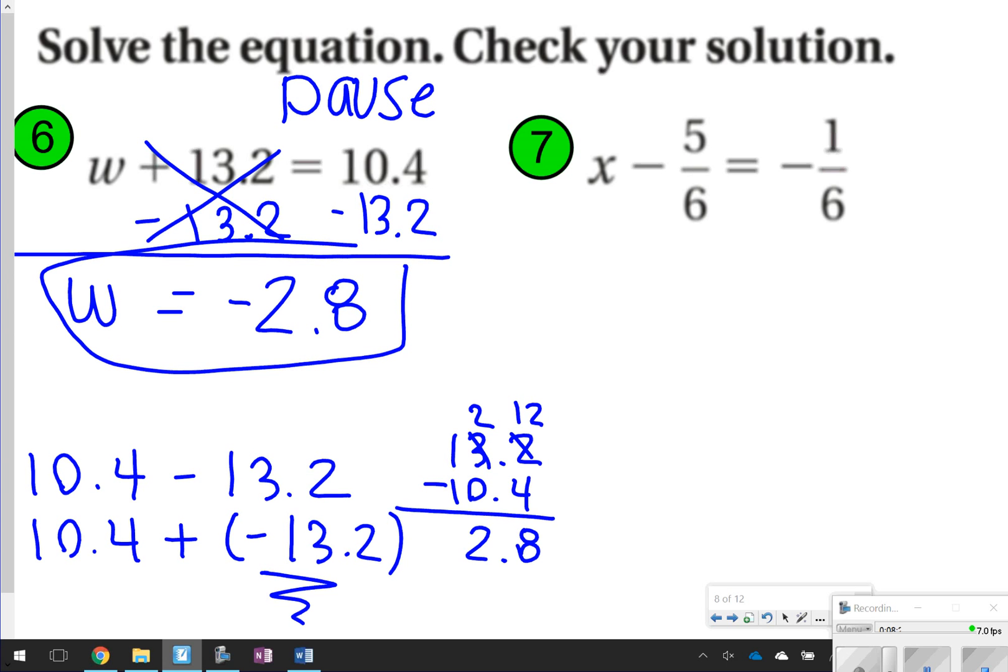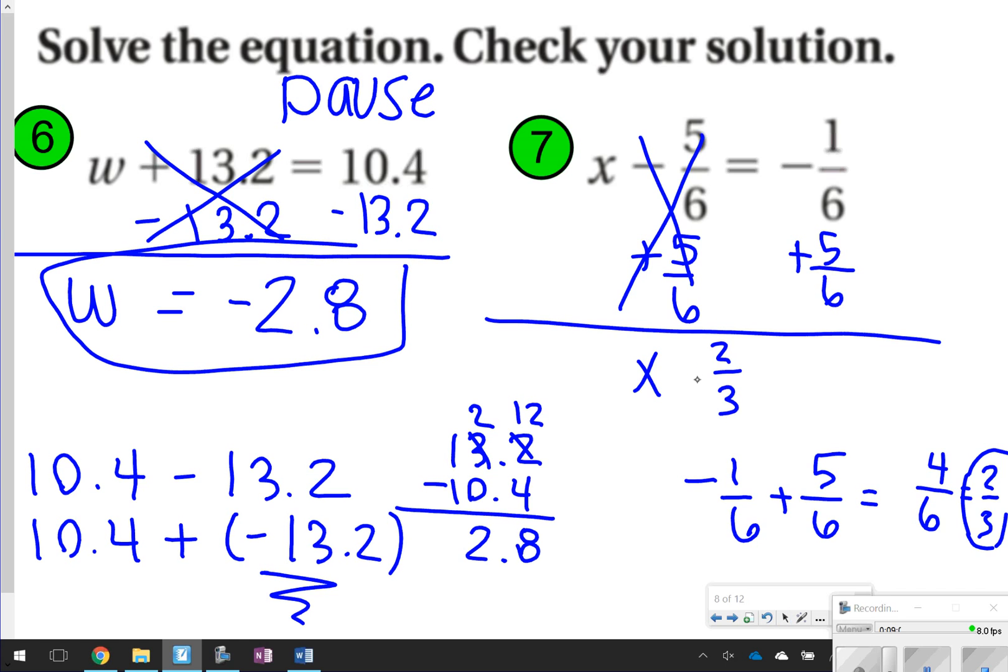Number 7, I see x - 5/6 = -1/6. To solve this one, I'm going to do the opposite of -5/6 and I'm going to add 5/6. These 5/6 will cancel out. All I'm left with is x. This should have been pretty simple because you have common denominators. Notice though you do have two different signs. -1/6 + 5/6. Different signs subtract. So I'm going to subtract those. I'm actually going to do 5 - 1 and I'm going to get 4/6. And I do need to simplify because making sure all of our fractions are simplified as our answers, that's going to give me 2/3. So 2/3 is my answer for number 7.